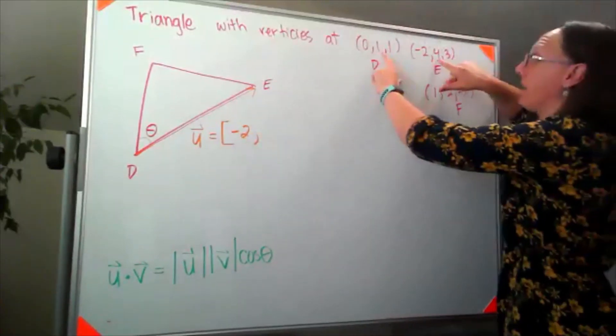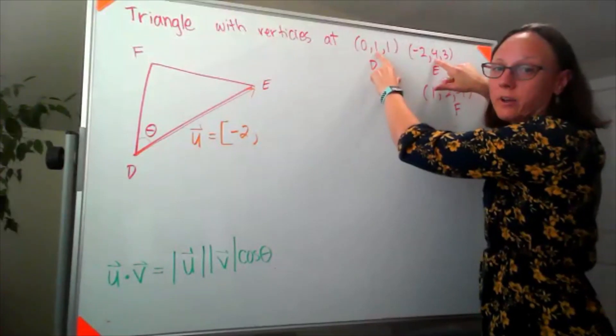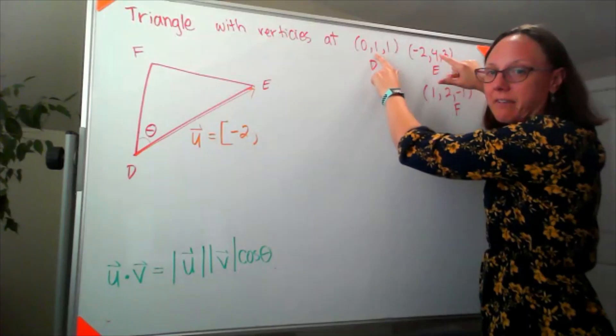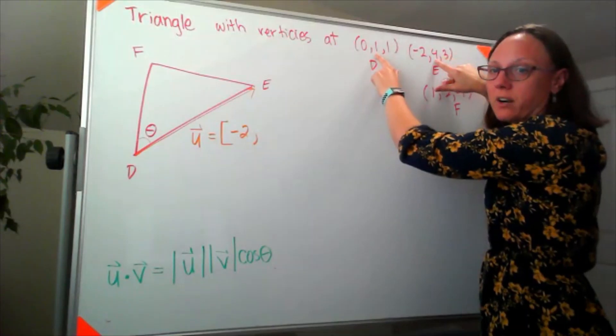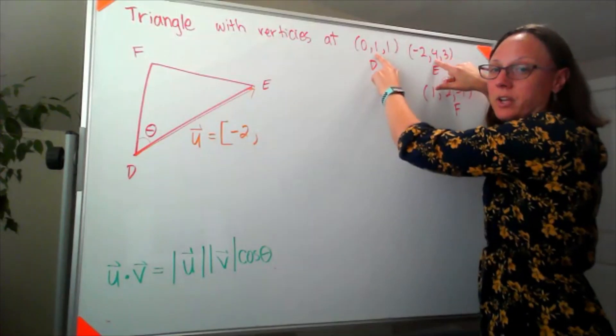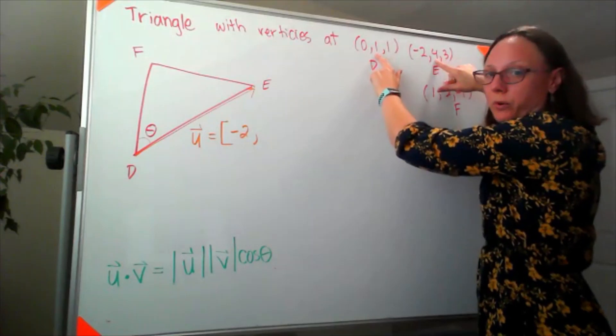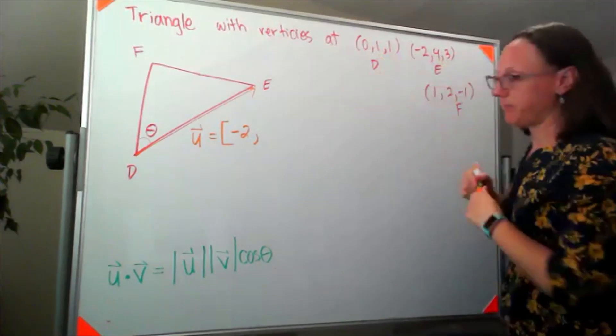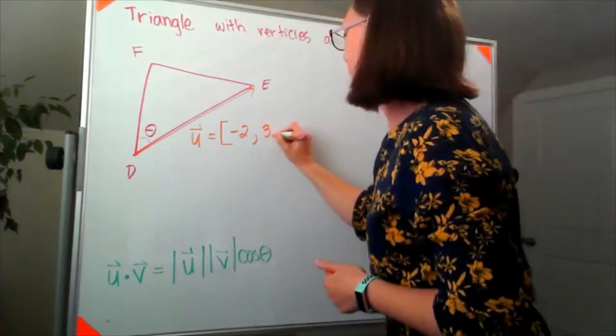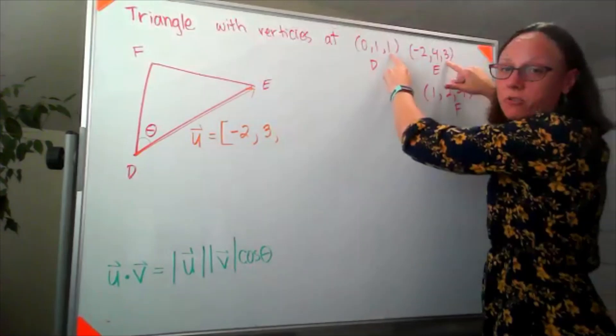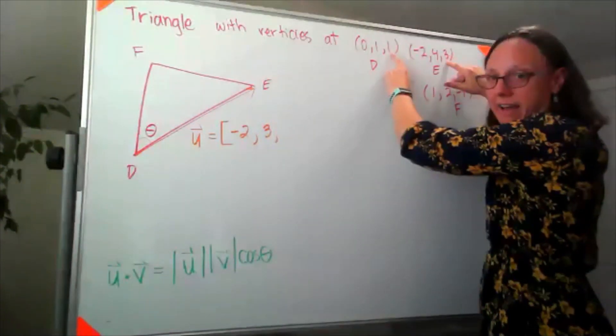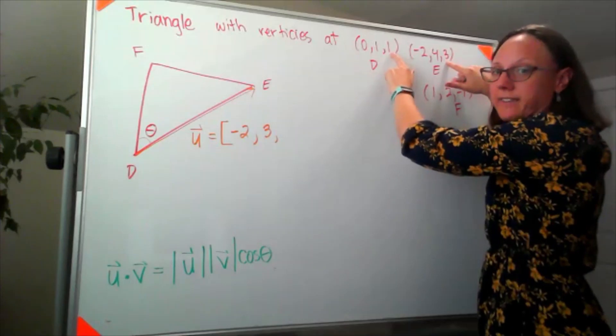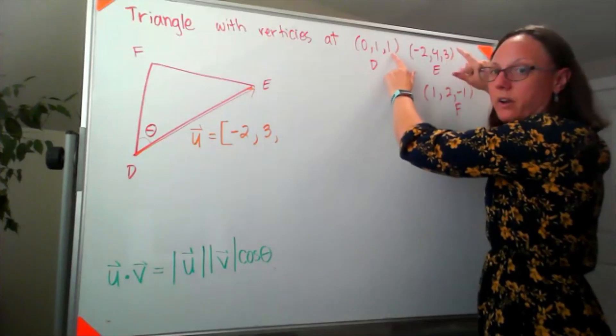Now I'm going to look at my y components or my j components. I'm standing at a y value of one and I have to get to a y value of four. That means I need to move three in the y direction to go from one to four. In my z direction I'm standing at one and I have to get to three, so I need to move positive two in the z direction.